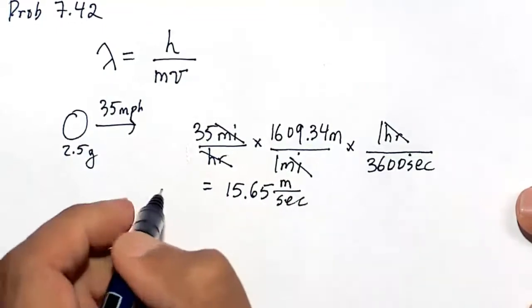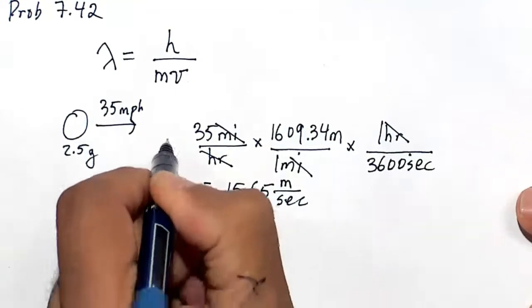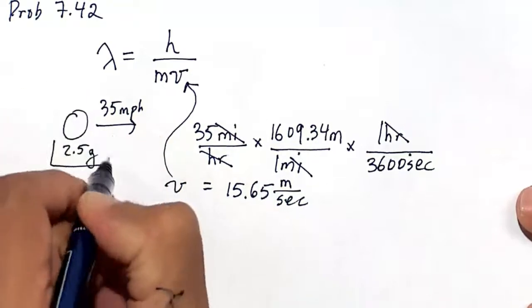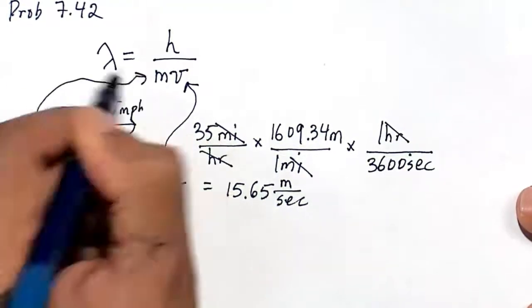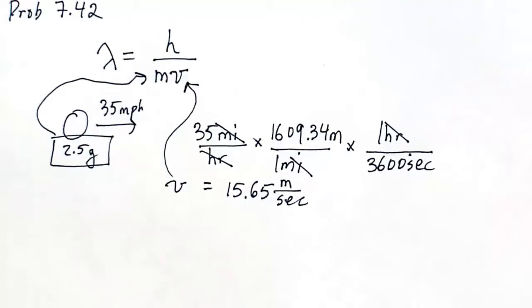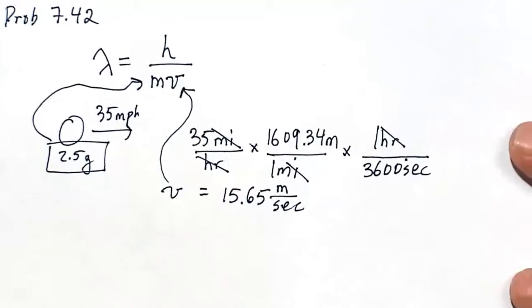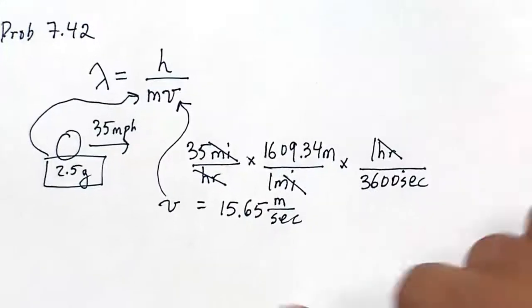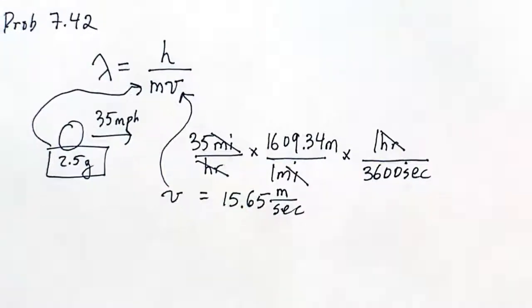That's going to be our velocity V in meters per second. The mass of the ping-pong ball is 2.5 grams. And Planck's constant is something we already know or can look up. Let's put all these things together and get our wavelength associated with this traveling ping-pong ball.